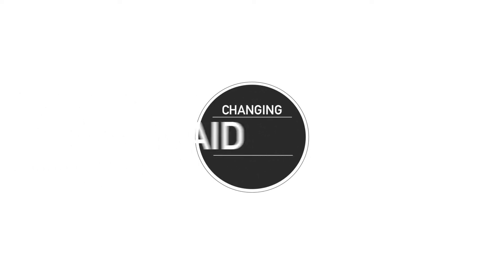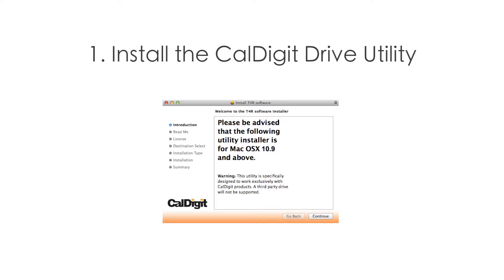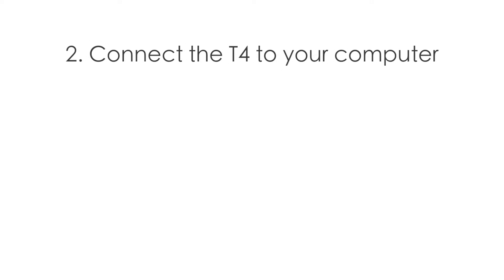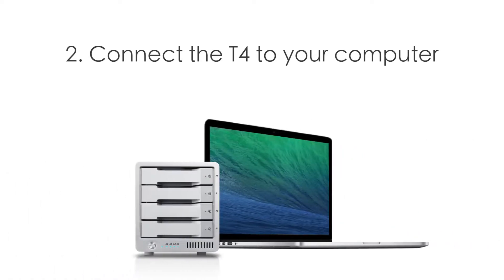In this video we will show you how to change the RAID settings on the CalDigit T4. The first thing you will need to do is install the CalDigit Drive utility software from the included CD or from the CalDigit website. Then connect your T4 to your Mac.